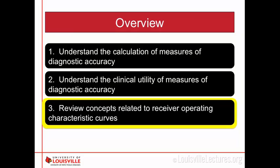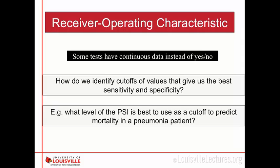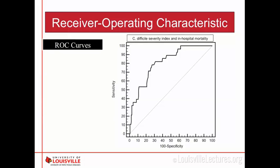The last concept is ROC curves and AUC. When you have a test that has continuous data — rather than a simple yes/no — such as the pneumonia severity index, where a higher score means more risk, you want to know what cutoff value gives the best sensitivity and specificity. For example, what level of the pneumonia severity index is best to use as a cutoff to predict mortality in a pneumonia patient? On an ROC curve, the y-axis is sensitivity and the x-axis is 100 minus specificity, which is the false positive rate.